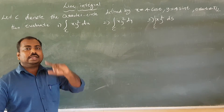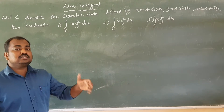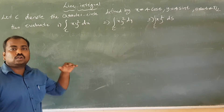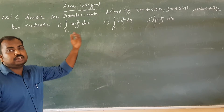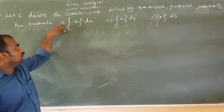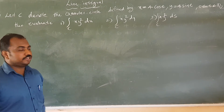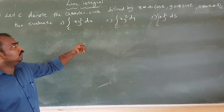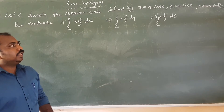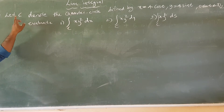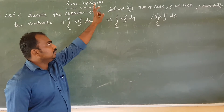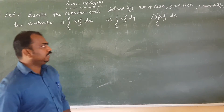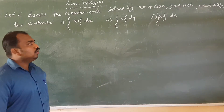We don't have a plane — we have one curve. Let C denote the quarter circle defined by x equal to 4 cos t, y equal to 4 sin t, where t is from 0 to π/2.